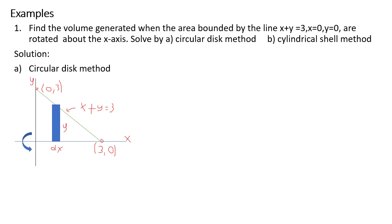Example: Find the volume generated in the area bounded by the line x plus y equals 3, x equals 0, y equals 0, rotated about the x-axis. Solved by circular disk method, with x equal to 0 and y equal to 0.